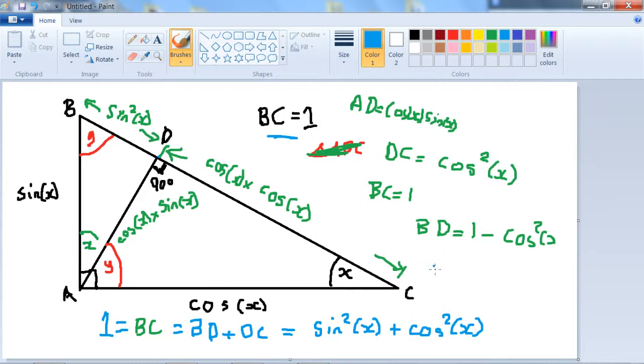And this is the theorem: cos squared X plus sine squared X equals 1. So that this is...